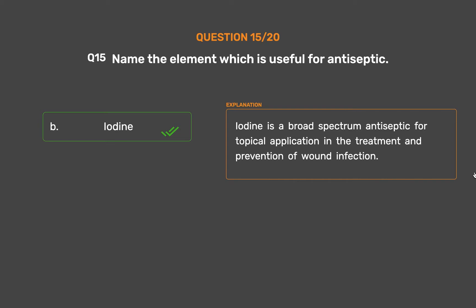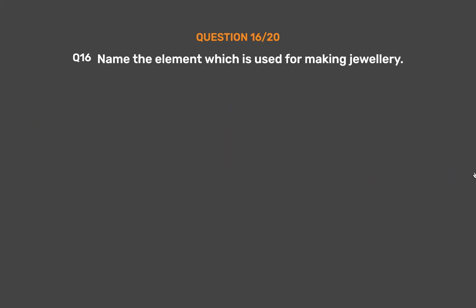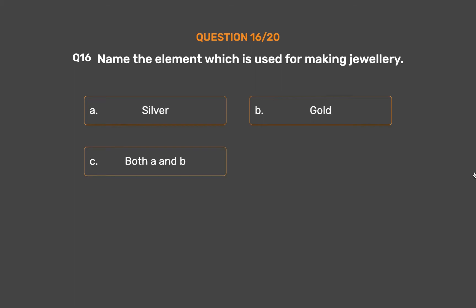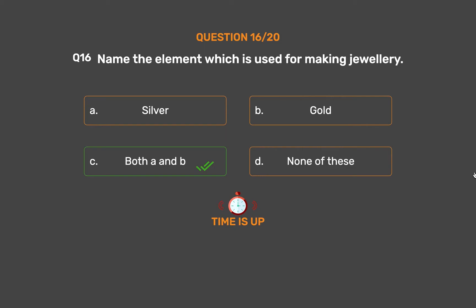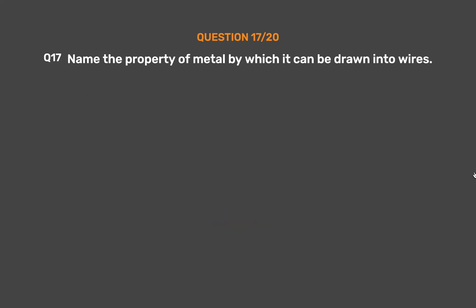Question number 16. Name the element which is used for making jewelry. Option A: Silver. Option B: Gold. Option C: Both A and B. Option D: None of these. The correct answer is Option C: Both A and B.